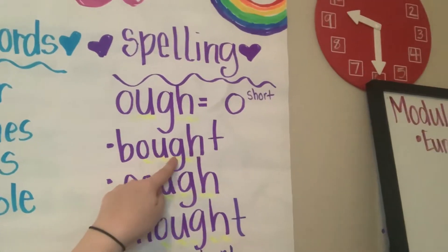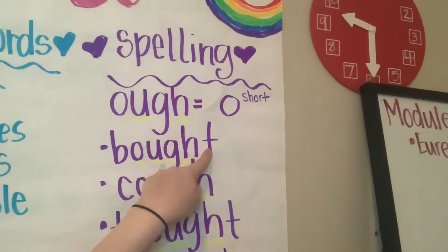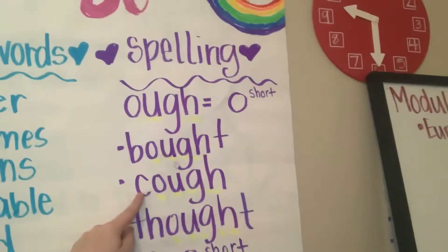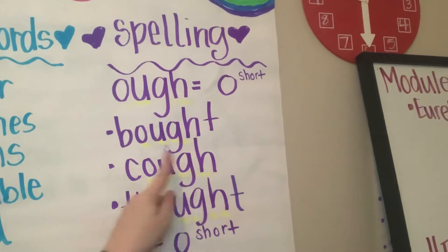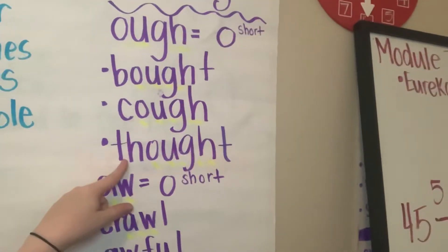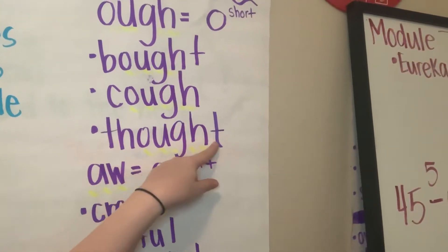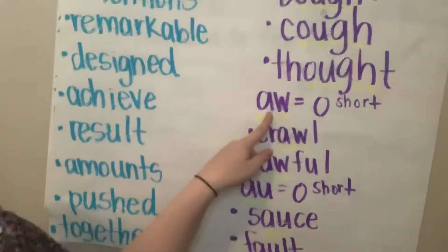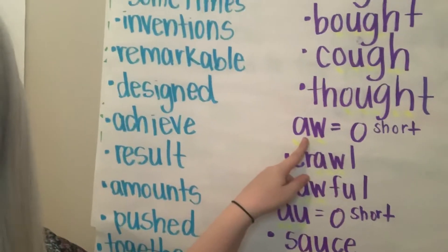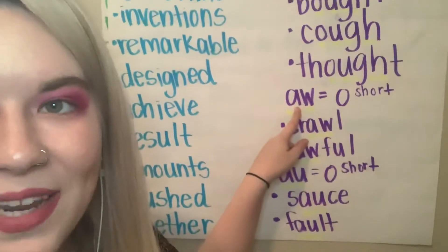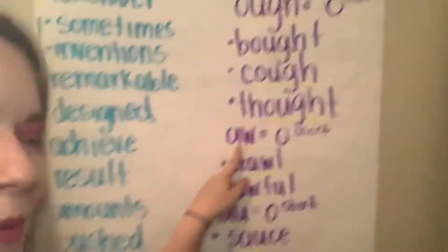Like in 'bought' — B, ah, T — past tense of 'buy.' 'Cough' — C, ah, F. 'Thought' — TH, ah, T. Also, the short O sound 'ah' can be made with the letter combination A-W.